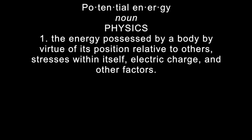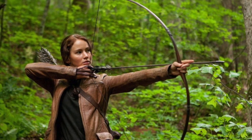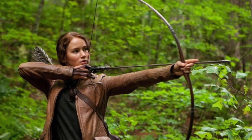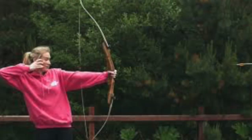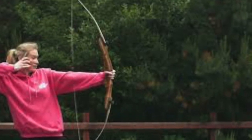Potential energy is energy possessed by a body by virtue of its position relative to others. In other words, it's energy caused by stress within an object. For example, a bow and arrow — when you pull back on the string, there's potential energy in the string itself. That's what gives it the power to go fast or go high when you let go of it.